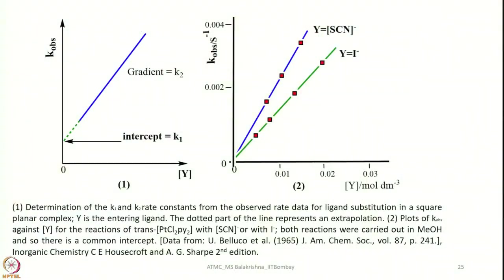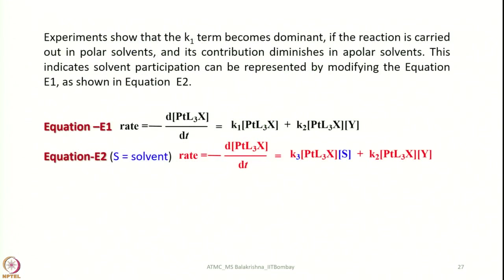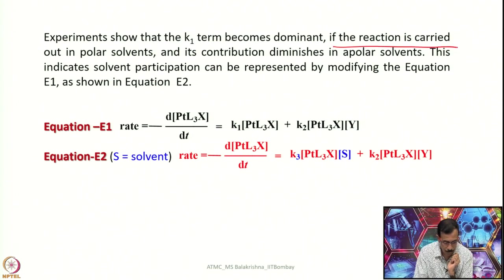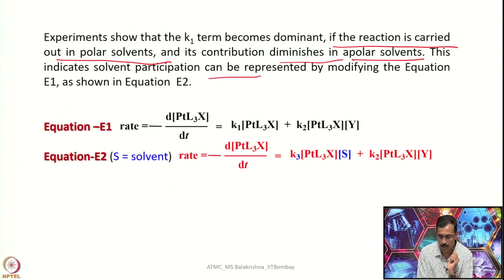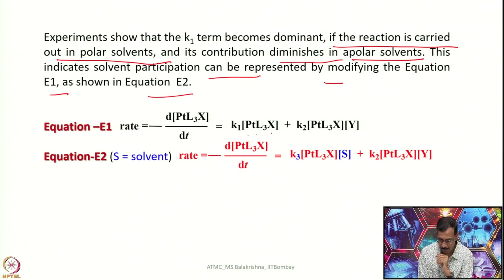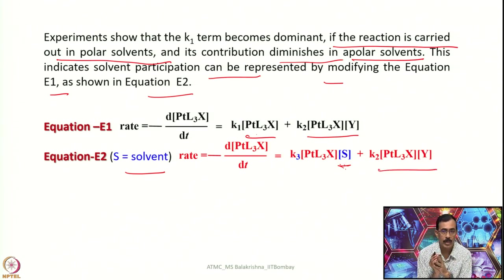Experiments show that the term k1 becomes dominant when the reaction is carried out in polar solvents, and its contribution diminishes in apolar solvents. This indicates solvent participation, which can be represented by modifying the rate equation. Specifically, a solvent term S can be added to the rate expression alongside Y, giving: rate = k3[PtL₃X][S] + k2[PtL₃X][Y]. This is how the influence of solvent is incorporated into the rate equation.